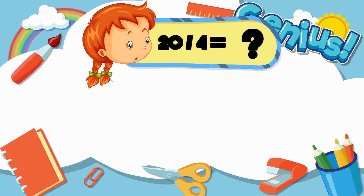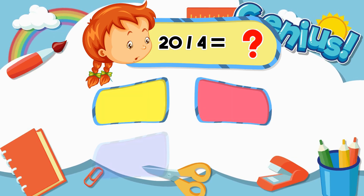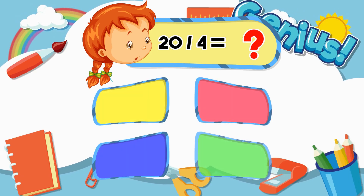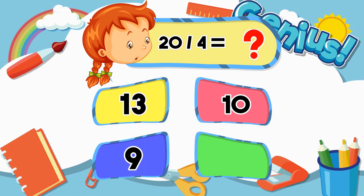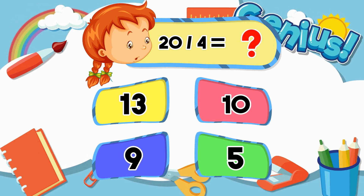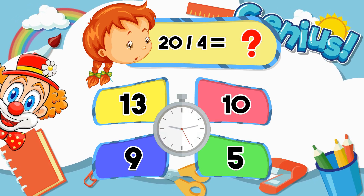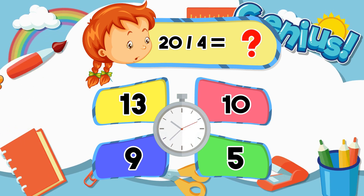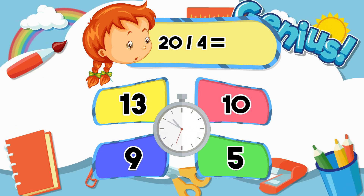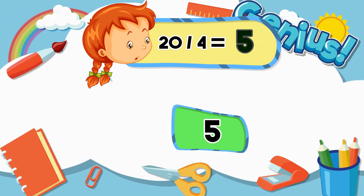What is 20 divided by 4? 13, 10, 9, 5. The answer is 5.